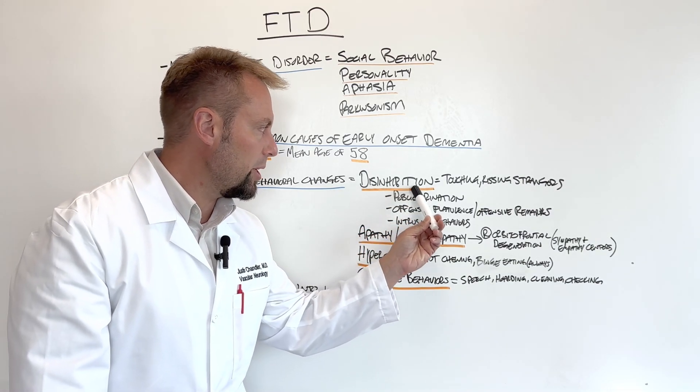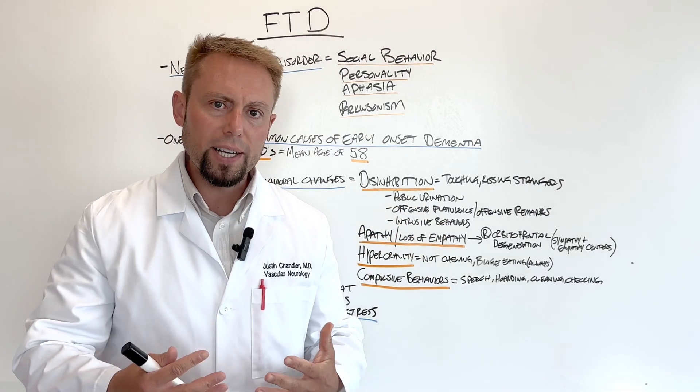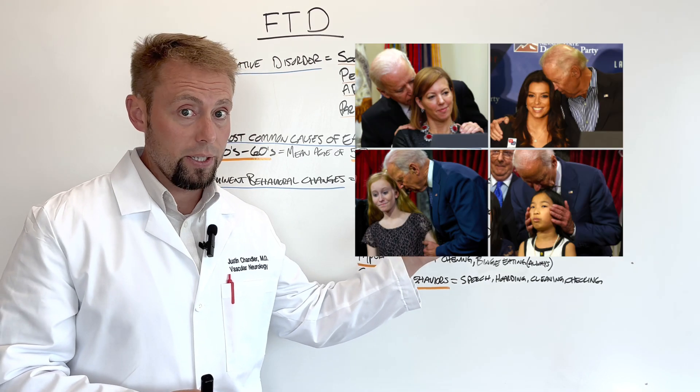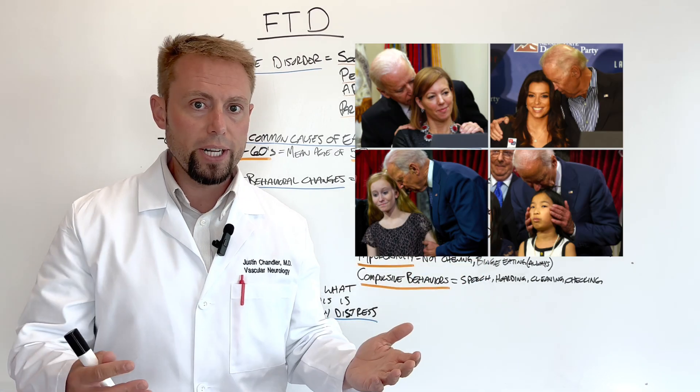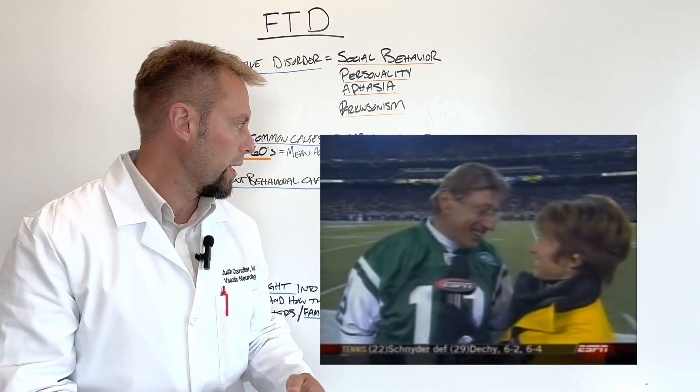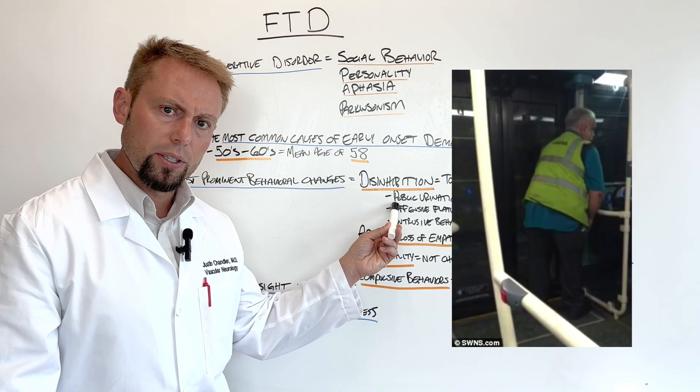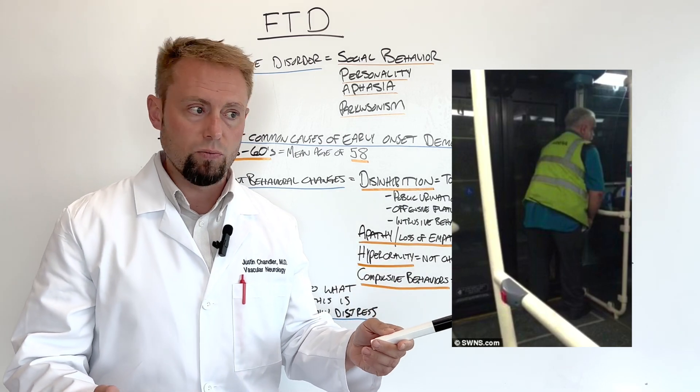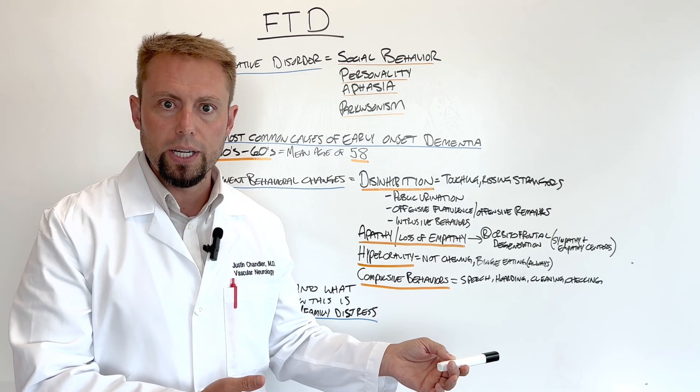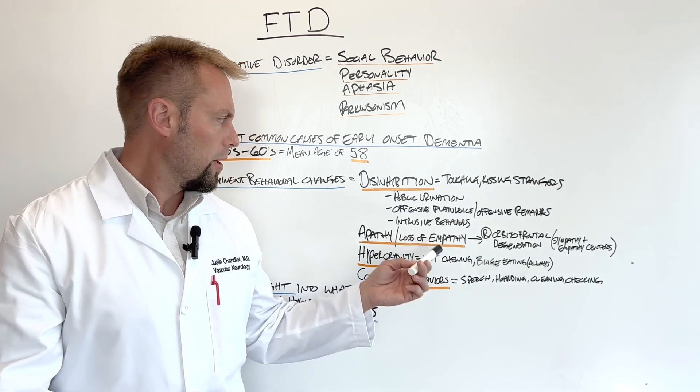This disinhibition can come across as inappropriate touching or kissing of strangers or people that no one is familiar with. It can be displayed as public urination, an individual deciding to just go over to the side of a building and urinating.